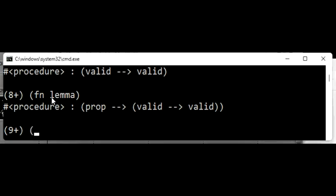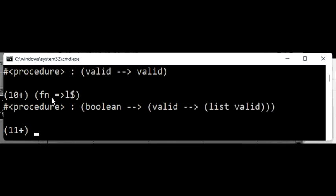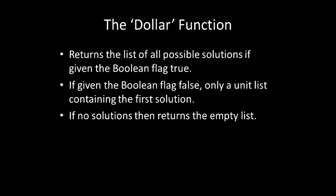For example, the impliesLeft function is defined in terms of a function impliesLeft dollars. If we ask for the signature of impliesLeft dollars in the top level, we get this response. The help function takes a boolean flag which determines whether all solutions are found or just one. If the argument is true, then impliesLeft dollars returns to the list containing all solutions found. If the argument is false, then a unit list containing the first solution found is returned.